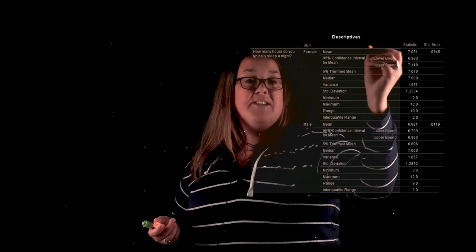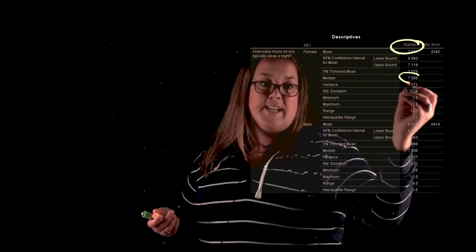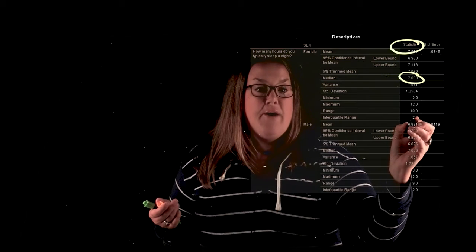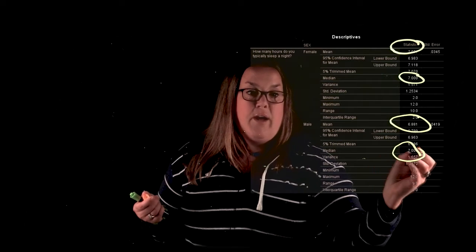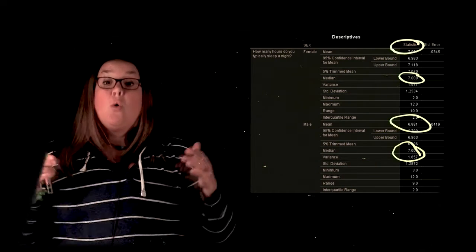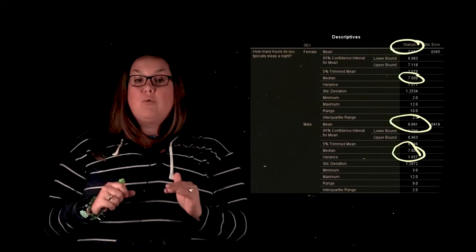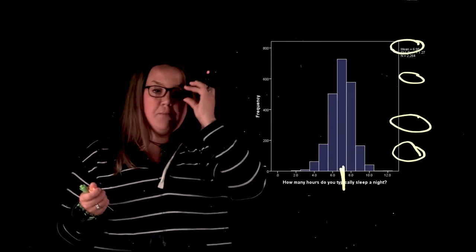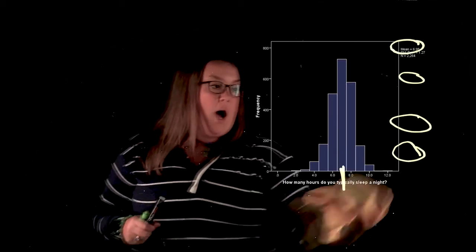Here we have the mean for females — this is a sample so this would be x-bar — and you can see it is 7.051. The median for females is 7, so those are almost exactly the same, and that happened because the distribution is very symmetric. For males we have a mean of 6.891 and the median is 7 — those are approximately equal because the distribution was symmetric. So for this data, because the graph is symmetric, I would expect my mean and median to be approximately right here, which is actually what we just saw: the mean and median are about 7.